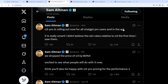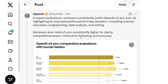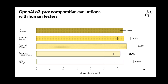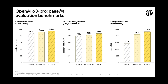So if you are a Plus user, you will probably be getting it late. This particular O3 Pro model has been outperforming the existing O3 model in education, programming, data analysis, and writing. They are showing a graph of O3 Pro's win rate versus O3, covering benchmarks in math, science, and coding competition between O1 Pro, O3 Medium, and O3 Pro models.